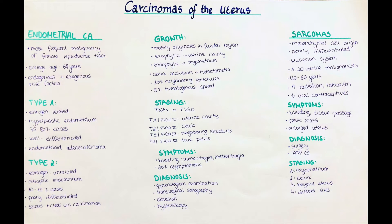Regarding tumor growth, carcinomas mostly originate in the fundal part of the uterus. Growth towards the uterine cavity is called exophytic, while growth towards the myometrium is called endophytic. The carcinoma can grow towards the cervix, which it may occlude, leading to hematometra — the uterus being filled with menstrual blood. In around 10% of cases, growth reaches neighboring structures such as the parametrium, vagina, or pelvic lymph nodes. Only in roughly 5% does hematogenous spread to the lungs, liver, and bones occur.